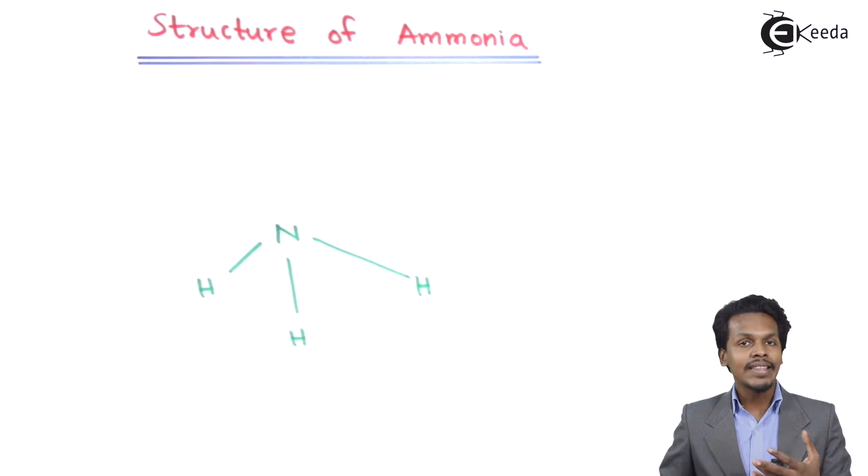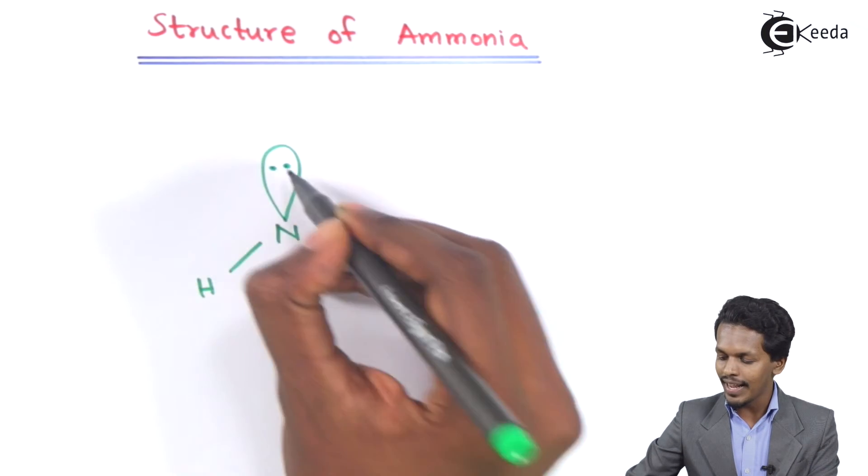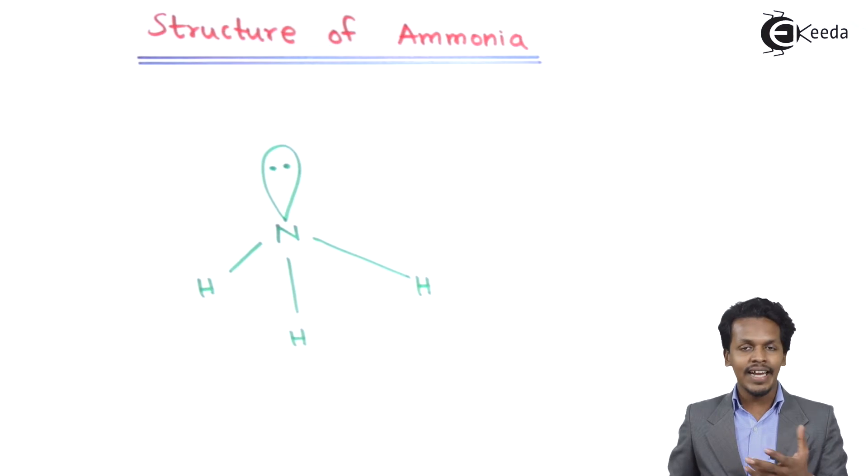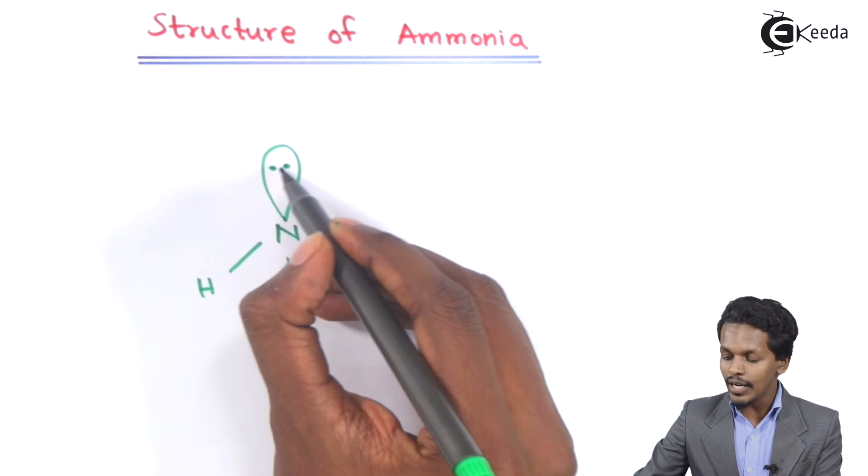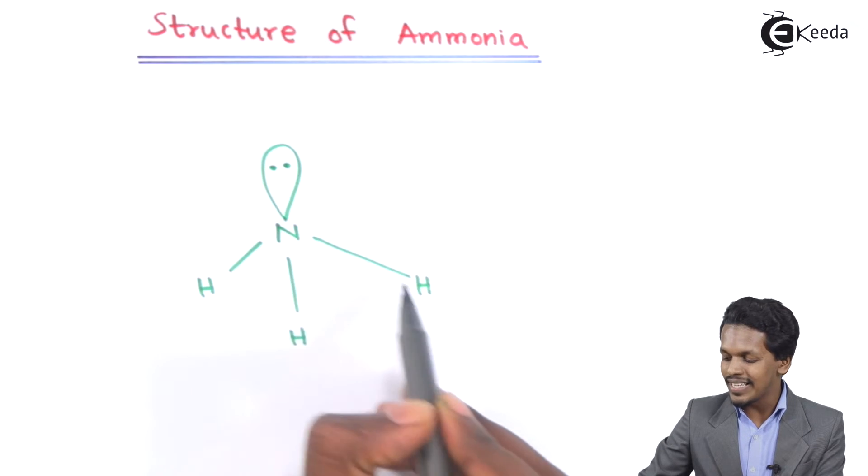I am talking about the lone pair of electrons and this lone pair of electrons it will be on the nitrogen. And that is the reason that the bond angle that we could find, because for sp3 hybridized we understand that the bond angle should be 109 degrees 28 minutes. But since this is a lone pair of electrons that is on the nitrogen atom and this is basically a bond pair.